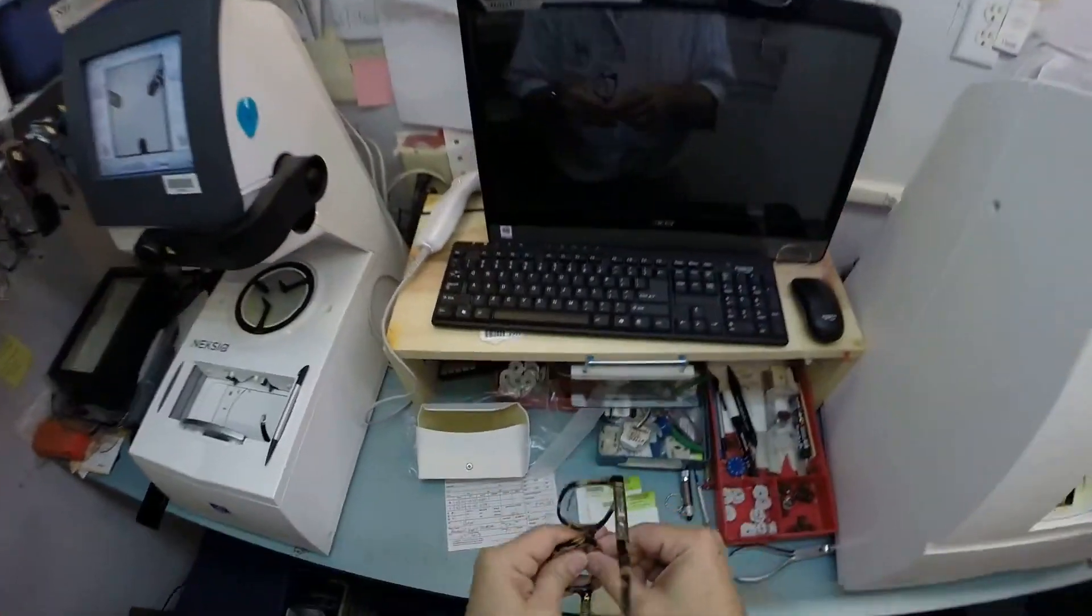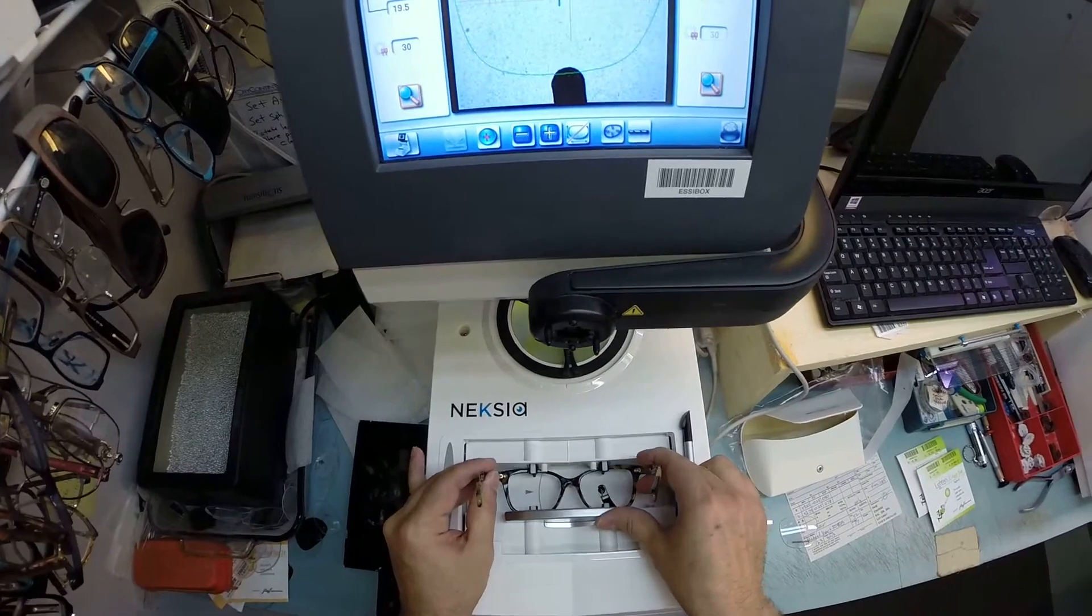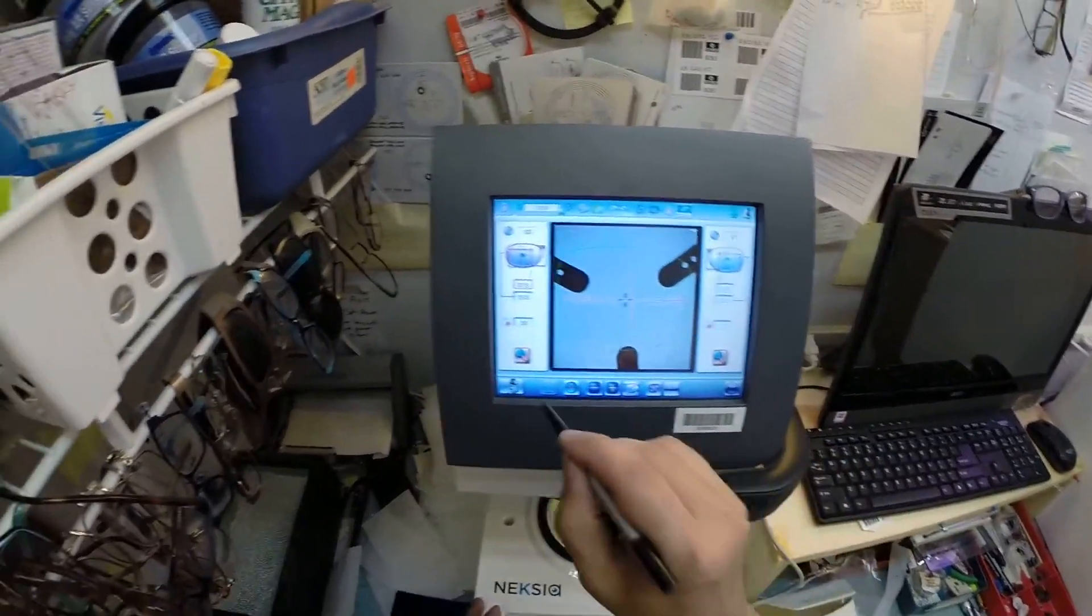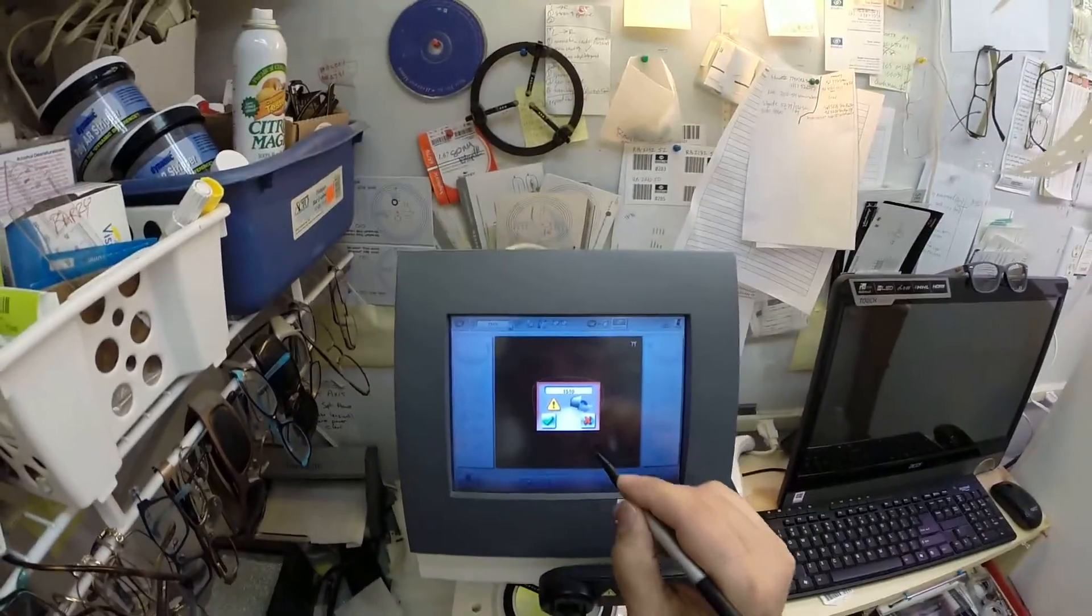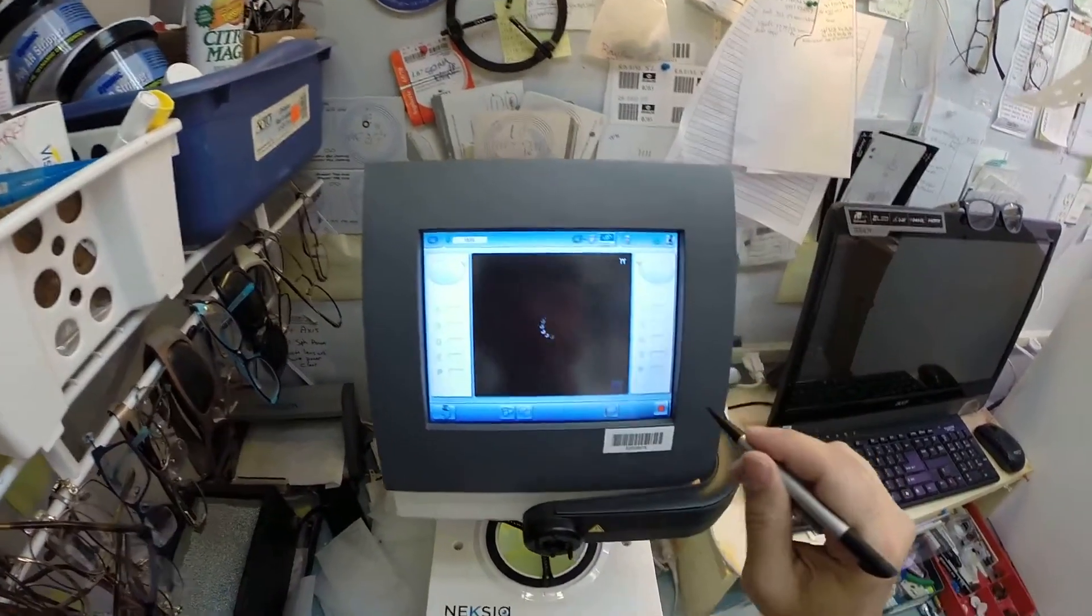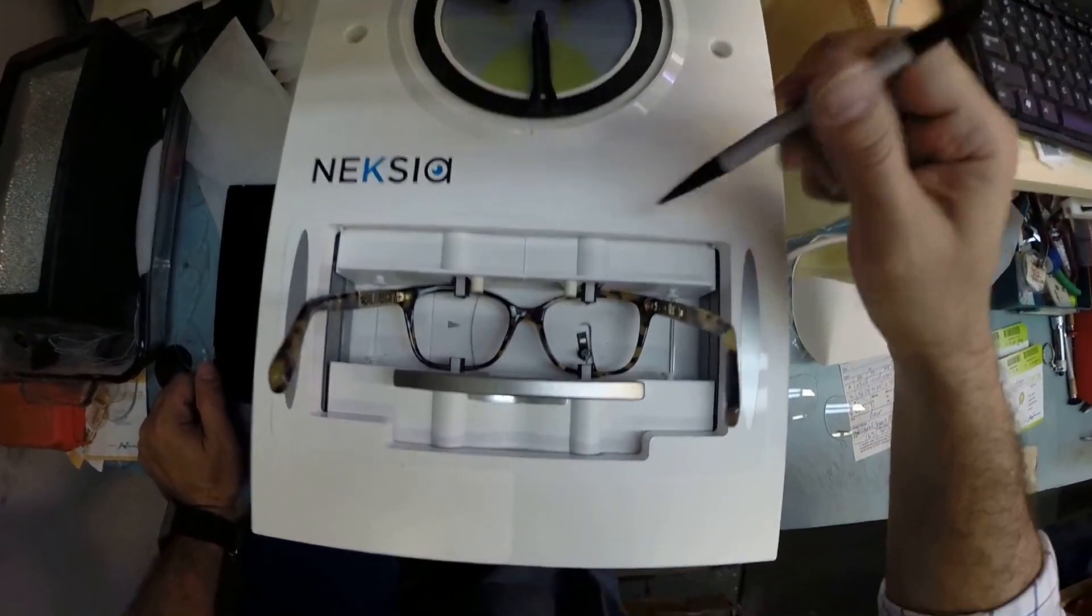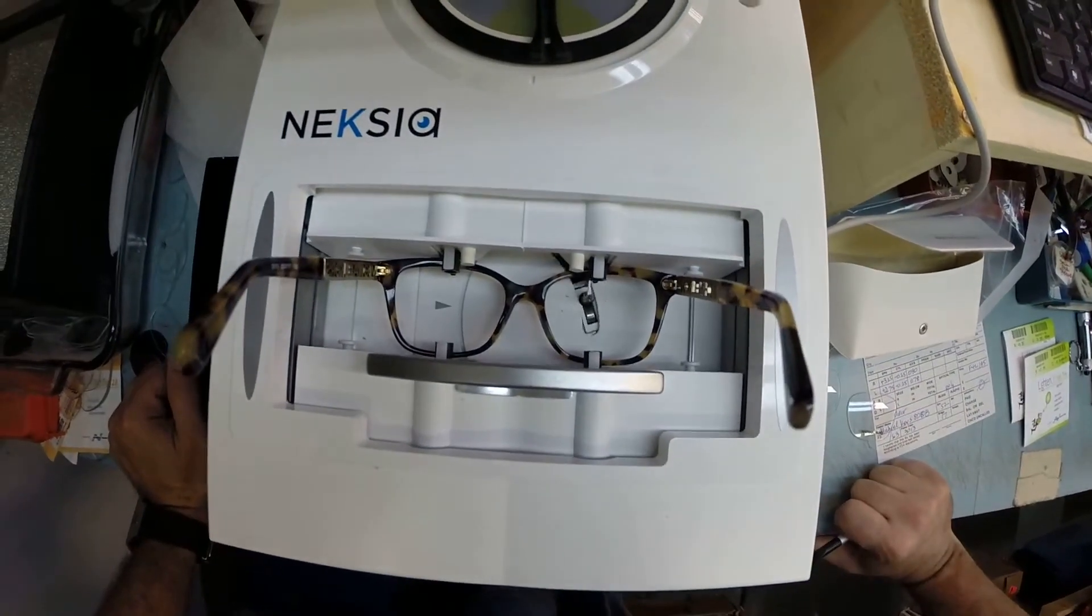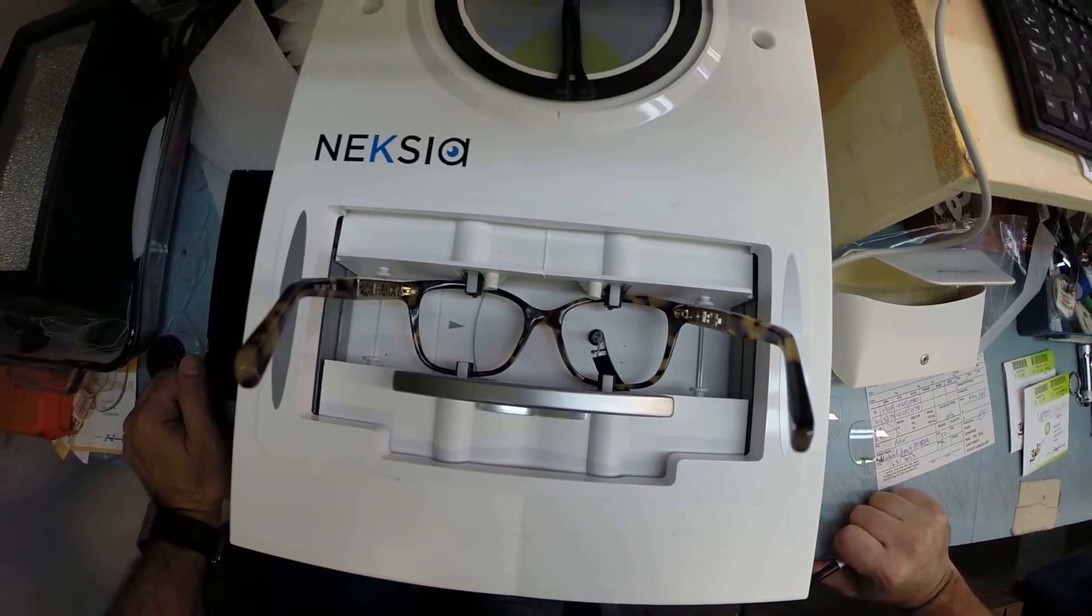I'm going to pop these out and I'm going to put your frame into the tracing element of my edger. I'm going to trace the shape. Everyone wants to know how the computer knows what shape lens to cut. This is why. This stylus pops up, goes around and traces this shape of the right side first before moving over and tracing the left.